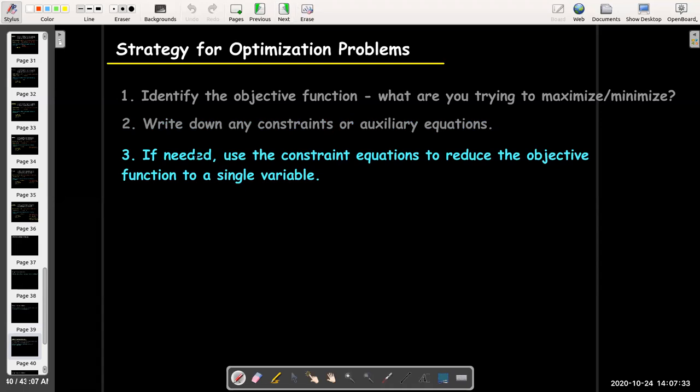And then, in our case, we needed to use the constraint equations to reduce the objective function to a single variable. So, we solved for L, and then wrote the area as a function of W only.